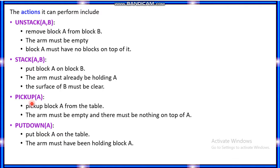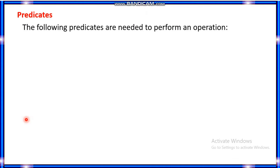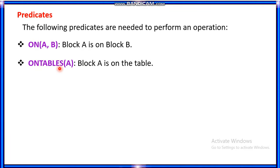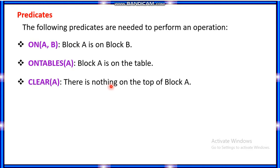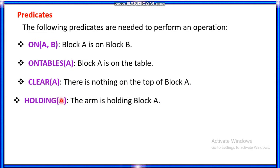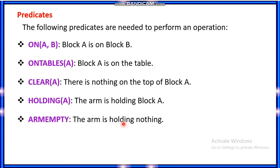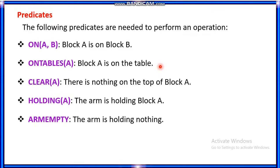These four actions can be expressed in the form of predicates: on(A, B) means block A is on block B; onTable(A) means block A is on the table; clear(A) means there is nothing on top of block A; holding(A) means the robot arm is holding block A; and armEmpty means the arm is holding nothing. These predicates are used to represent operations like stacking, unstacking, clearing, and putting.